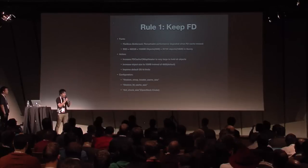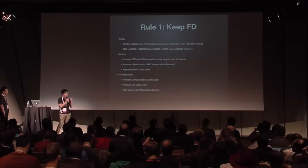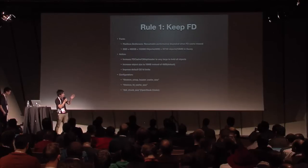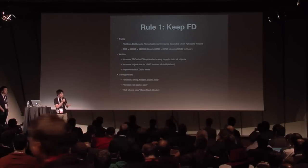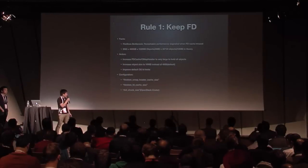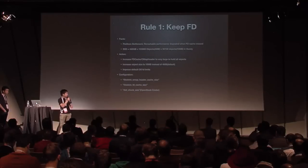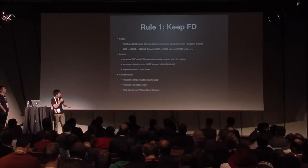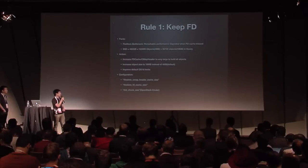We need to increase the object size. By default, we can change the object size to 16 million bytes. We can also use the opt-check size parameter in OpenStack Cinder to create volumes with different object sizes.